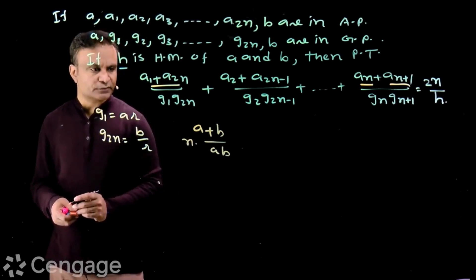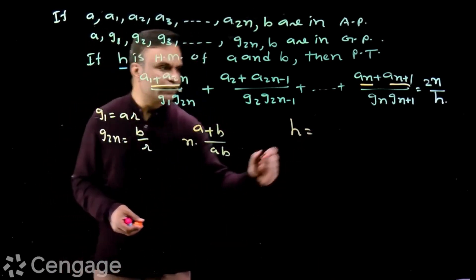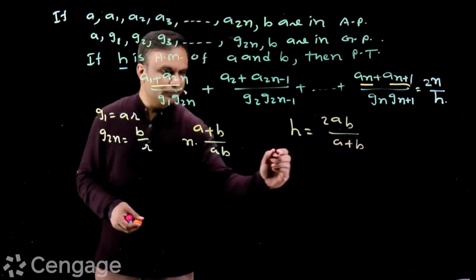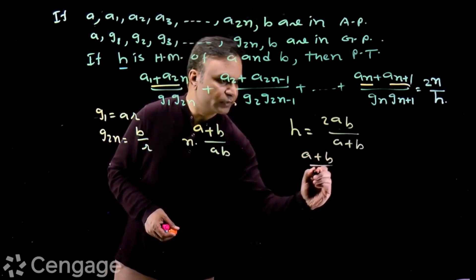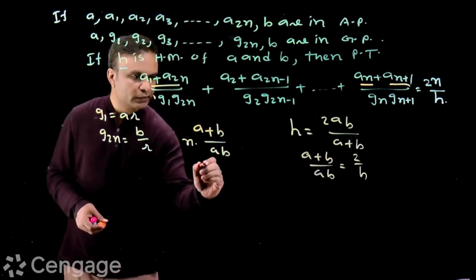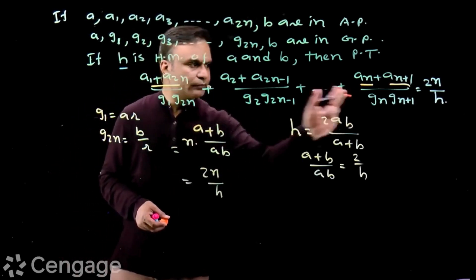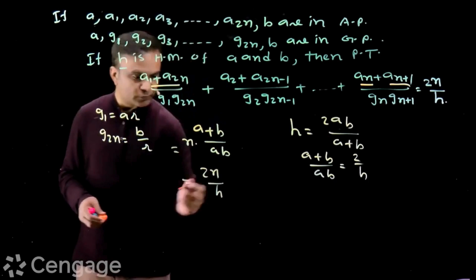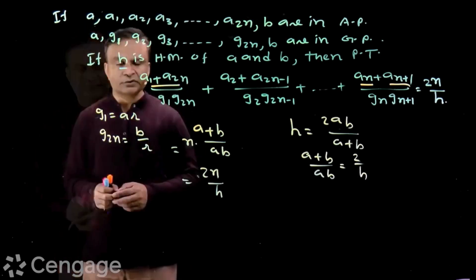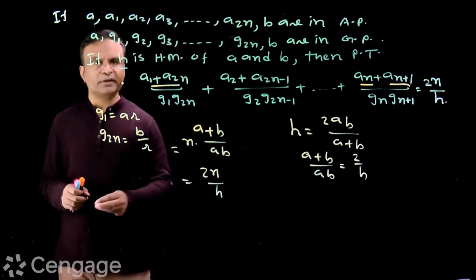This is occurring n times. Now, the harmonic mean h between two numbers a and b is 2ab over (a+b). From this, we have (a+b)/ab = 2/h. Substituting this value, we get the sum equal to 2n upon h. So this sum of terms in the LHS is equal to 2n/h, where h is the harmonic mean of a and b. This is a very interesting question in which all the progressions — AP, GP, and HP — are involved.